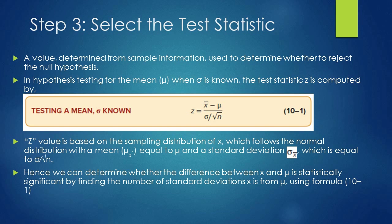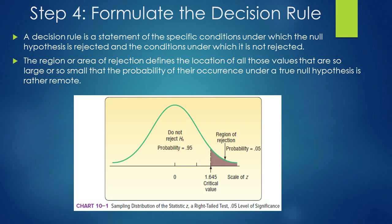Step 4 is to formulate the decision rule. A decision rule is a statement of the specific conditions under which the null hypothesis is rejected and the conditions under which it is not rejected. In this figure we take a 5% level of significance for a one-tail test. Looking up 0.05 in the Z-table, we get the critical value equal to 1.645.